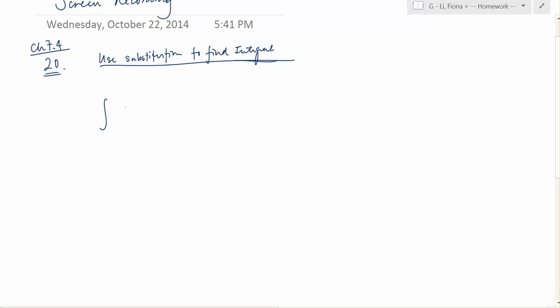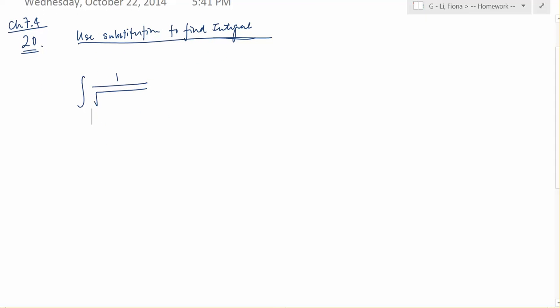So first of all, we have to do what we need to do, which is to write down the question, which is the integral of 1 over the square root of 9 minus 4x squared dx. And the person who wrote this book was being really nice because we're given a little hint, which is x equals 3 over 2 sine t.